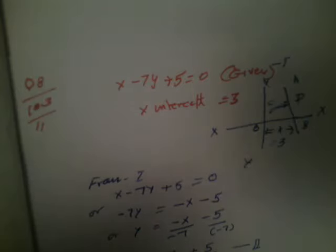This is question number 8, exercise 10.3 on Straight Lines. Find the equation of the line perpendicular to the line x-7y+5 is equal to 0 and having an x-intercept of 3.